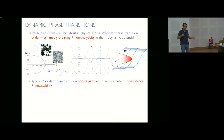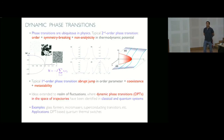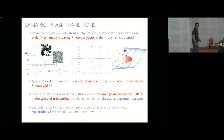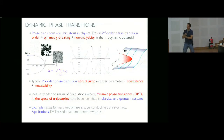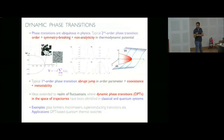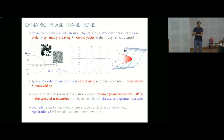These ideas, which all of us know about, have recently been extended to the realm of fluctuating behavior, where dynamic phase transitions in the space of trajectories have been identified in many different systems, both classical and quantum. There are many examples of dynamic phase transitions, starting from glasses, stochastic plastic gases, micromasters, superconducting transistors, etc., and also applications such as DPT-based quantum thermal switches.